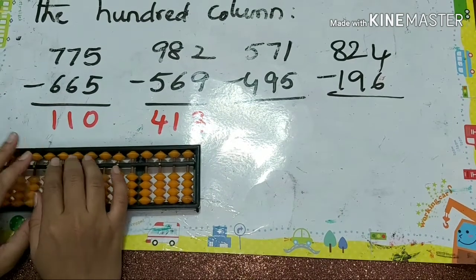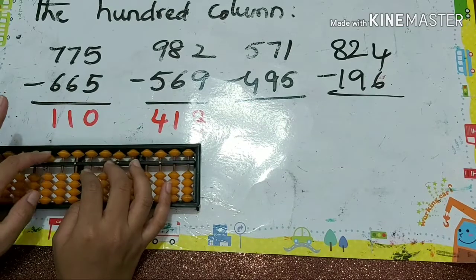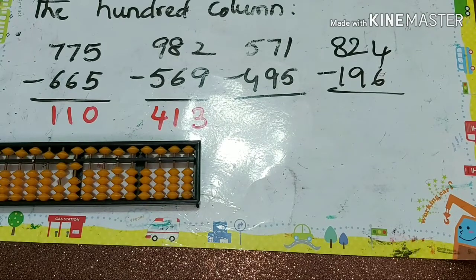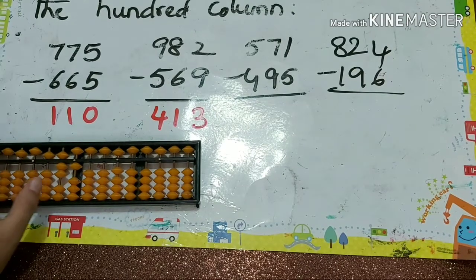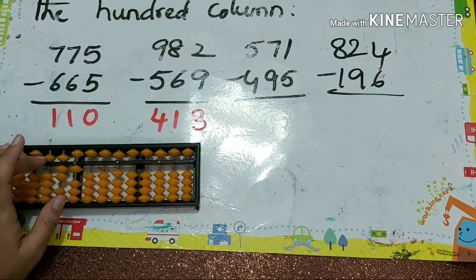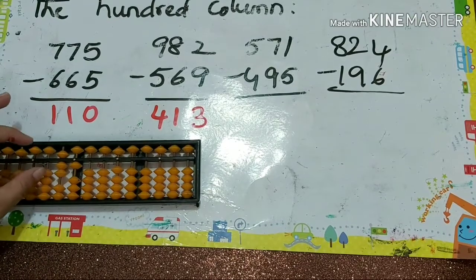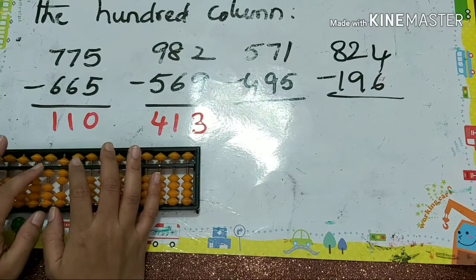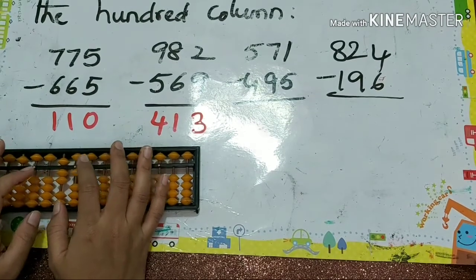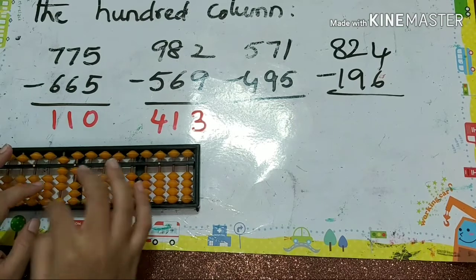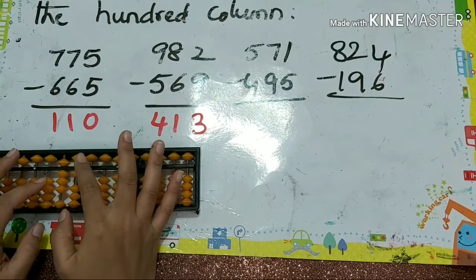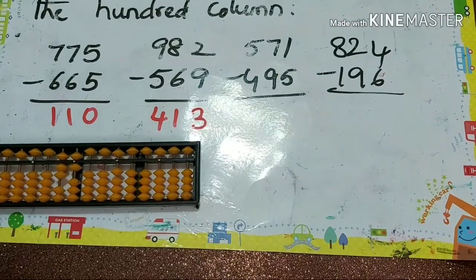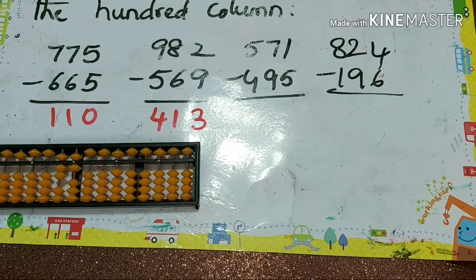Next one: 571 minus 495. Minus 4 — that is minus 5 plus 1. Then minus 9 — that is minus 10 plus 1. Then minus 5 — that is minus 10 plus 5. Answer is 76.